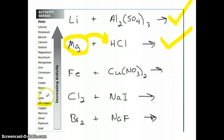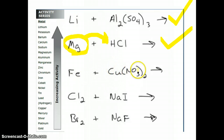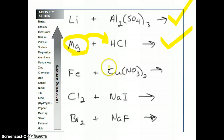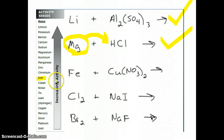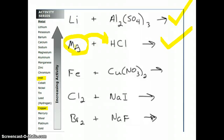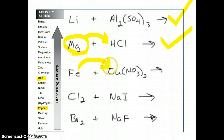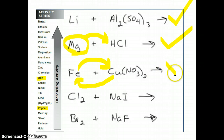Here we have iron and copper nitrate. We want to see if iron will come in and replace the copper in copper nitrate to produce iron nitrate. We find iron in the activity series, and then copper, which is lower down. Iron is more reactive, so it will come in and replace this copper, knocking that copper out so it's left by itself. We'll end up with iron nitrate and copper by itself. This reaction will happen.